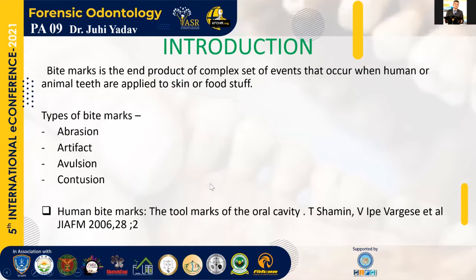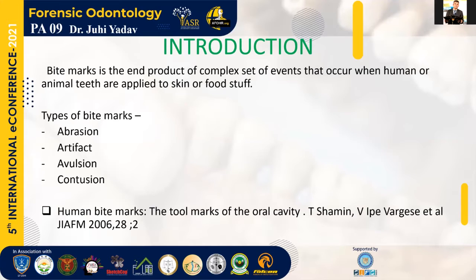So what is exactly a bite mark? Bite marks are the end product of a complex set of events that occur when human or animal teeth are applied to skin or foodstuff. There are certain types of bite marks: abrasion, where the outer layer of the skin is abraded off; artifact, where some body part is missing with the bite mark; avulsion, where the bite mark removes the whole skin and certain layers beneath it; and contusion, which involves hemorrhagic bite marks that can be incised wounds.